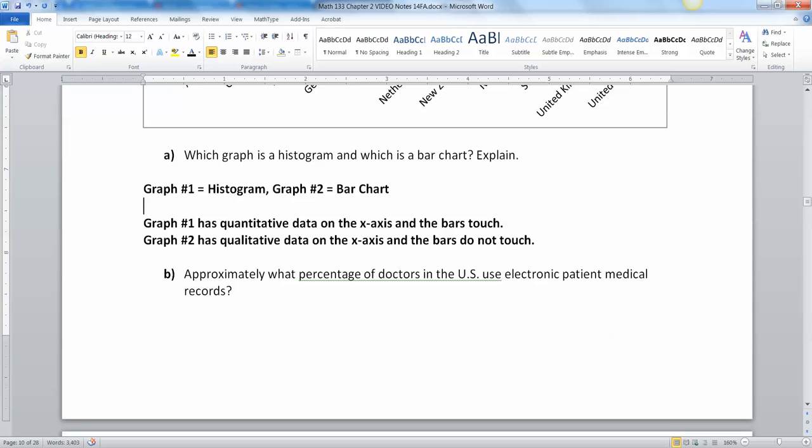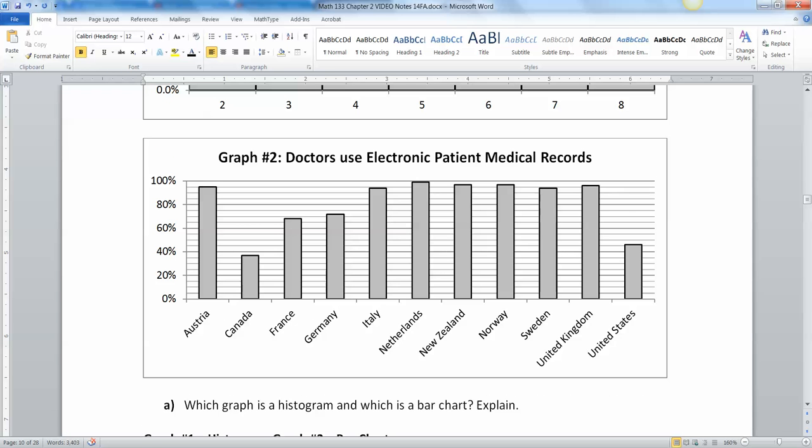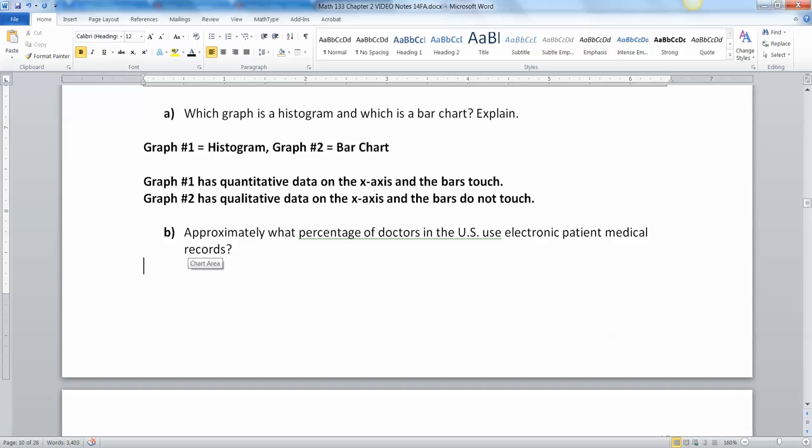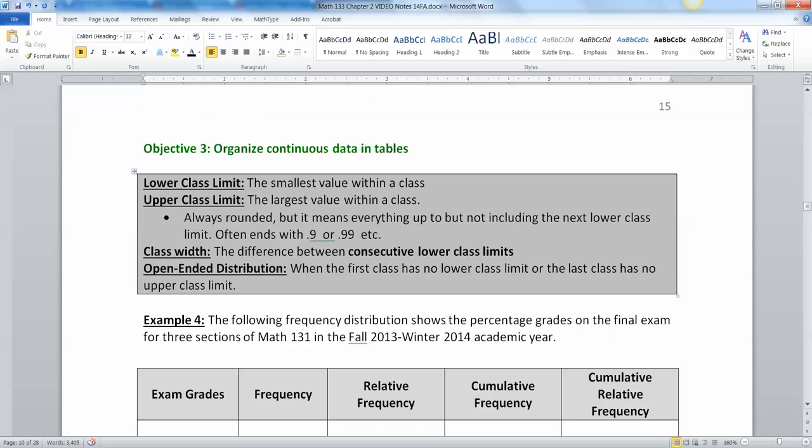What percentage of doctors in the U.S. use electronic patient medical records? And by the way, yes, this is real. I don't remember what year this was. It was 2000 something. So it looks like it's 46%, but it's just a little bit over 45 because the middle bar would be 50%, so the one right below it would be 45. So it's about 46%.